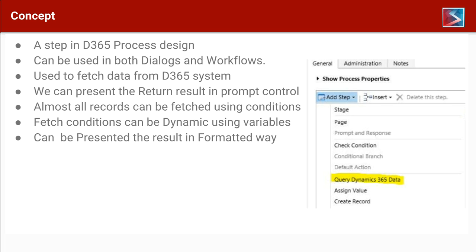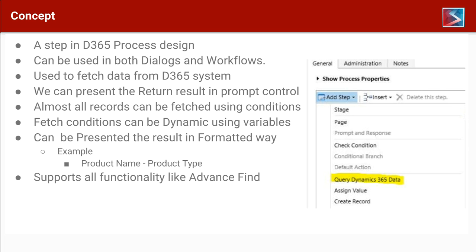The data retrieved from the database can be viewed and selected by the user. Almost all records can be fetched using conditions, and the conditions can be dynamic using variables. For example, if you want to select opportunities for a specific customer, you build the condition with a filter variable as a dynamic value assigned from the system. The returned results can also be represented in a formatted way, such as product name hyphen product type, shown in option sets.